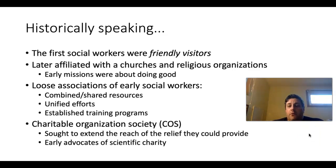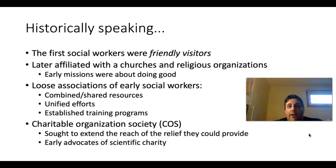Some of the earliest associations of social workers started establishing training programs when it became clear that social workers needed a well-articulated procedure. One of the first formal social work organizations were known as charitable organization societies. The purpose of these was to extend the reach of the relief they could provide. They were also early advocates of scientific charity — a really early form of assessment — where relief would be targeted to people most likely to be helped by it, and reduced priority given to those who could not be helped.